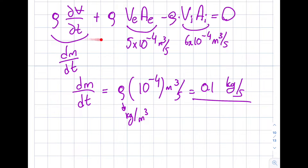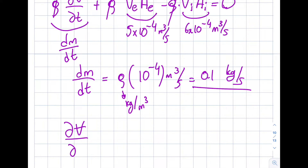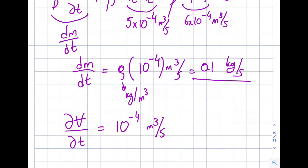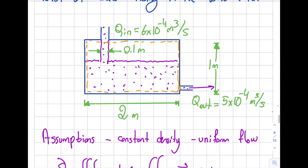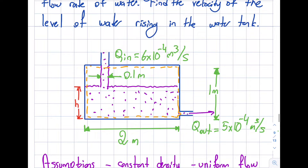Going back, since densities are constant I can cancel them, giving ∂V/∂t = 6×10⁻⁴ − 5×10⁻⁴ = 10⁻⁴ m³/s. This is how much the volume is increasing. But the question asks for velocity, not volume change. So I call the current water height h — a variable — and the velocity of the rising surface is dh/dt.